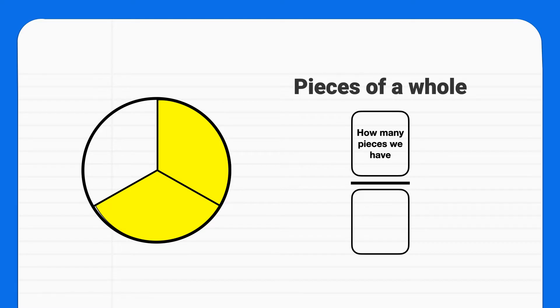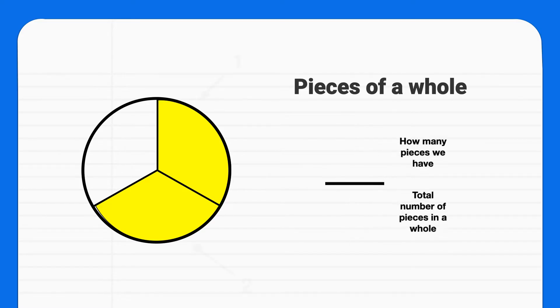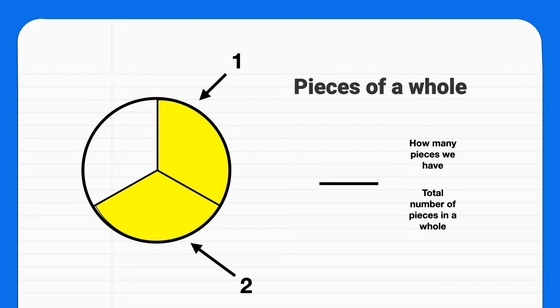And the bottom number, the denominator, represents the total number of pieces in a whole. Therefore, in this image, we have the fraction 2 thirds.